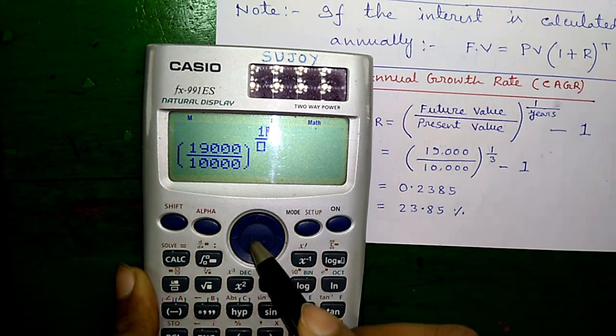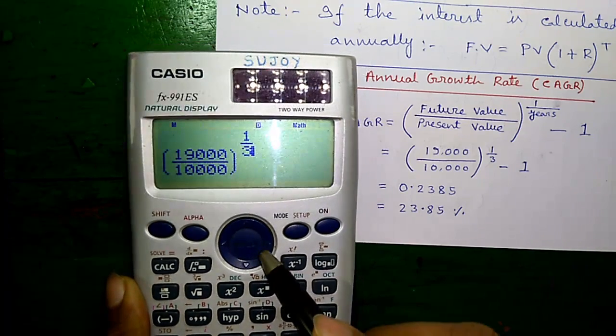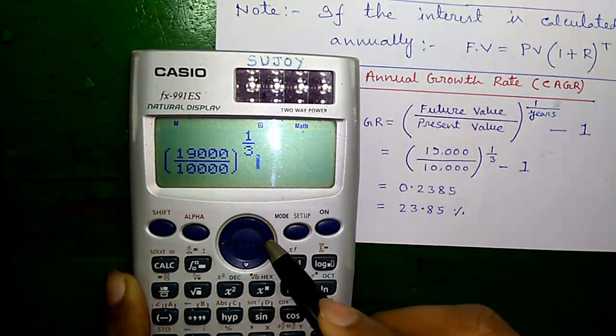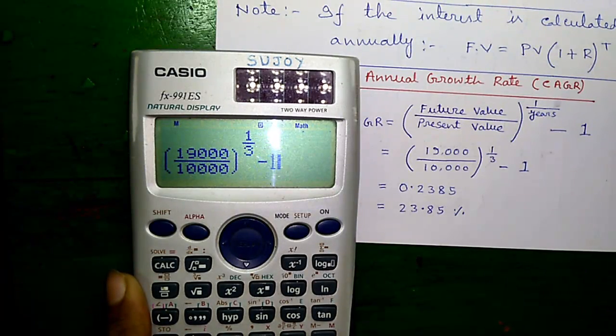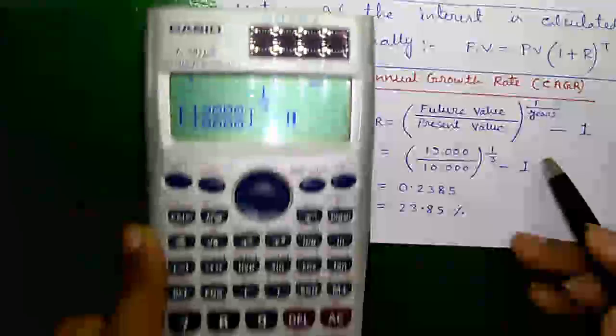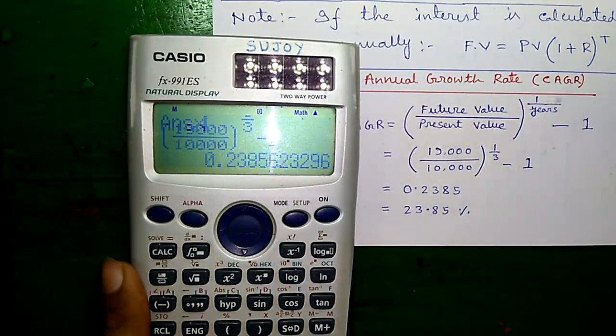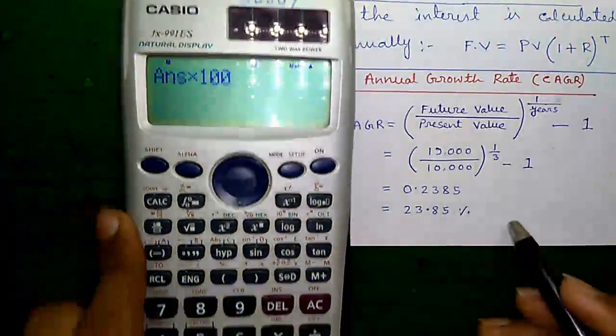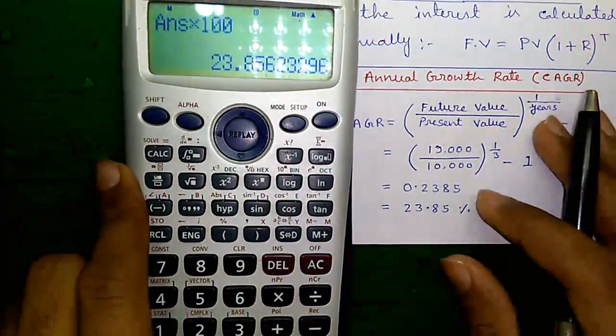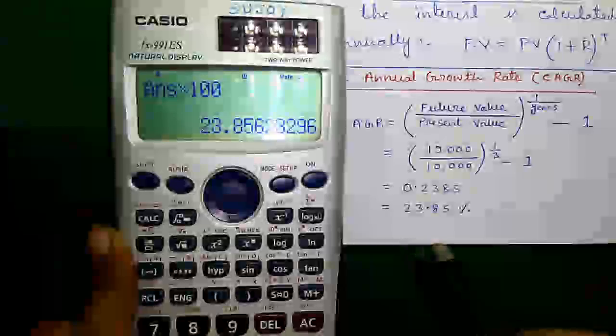fraction, 1, scroll down, 3, scroll right, minus 1, press equals to, is 23.85%.